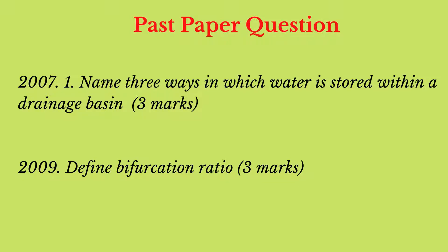I will leave you with two past paper questions. The first question asks you to name some ways in which water can be stored within the drainage basin. You could talk about soil moisture storage, ground storage deeper in the ground within rocks called aquifers, surface storage, and storage on buildings or trees as interception storage. The next question asks you to define bifurcation ratio.